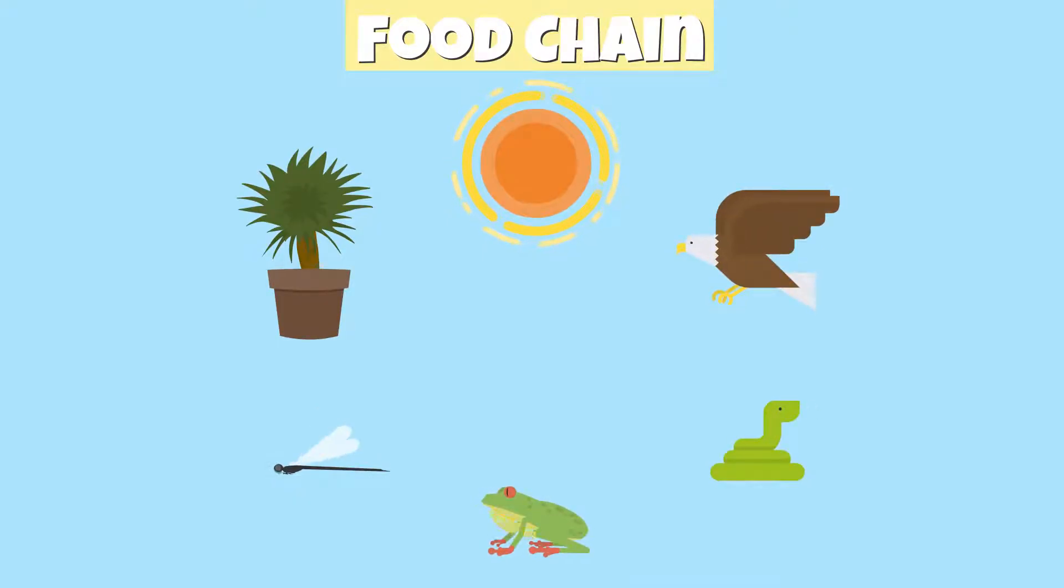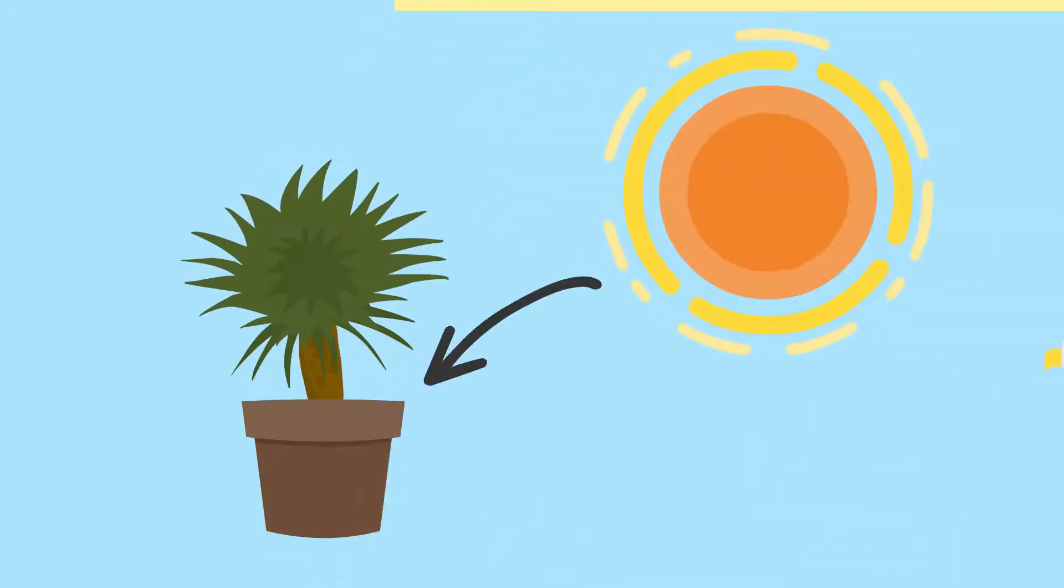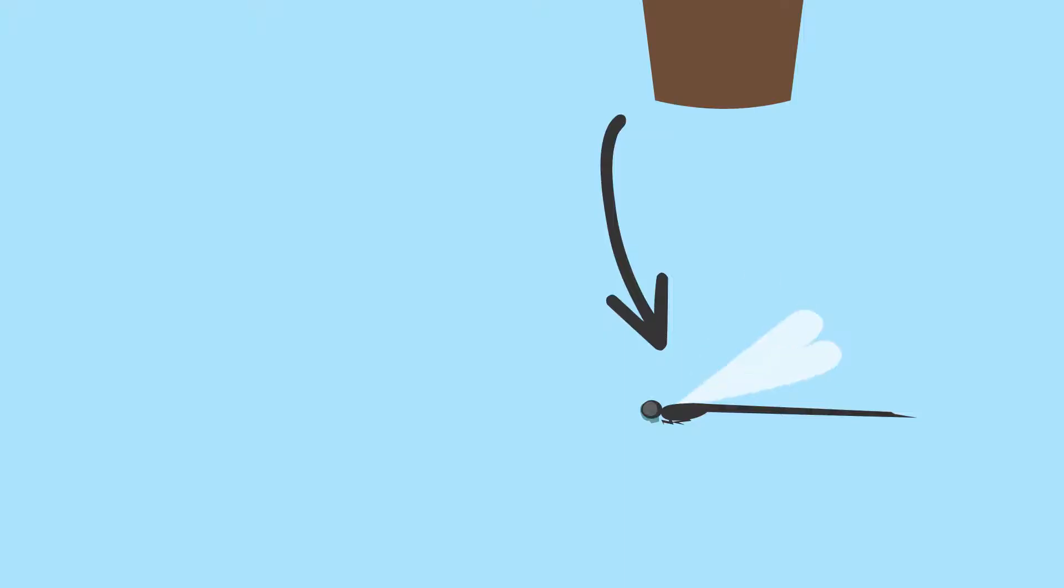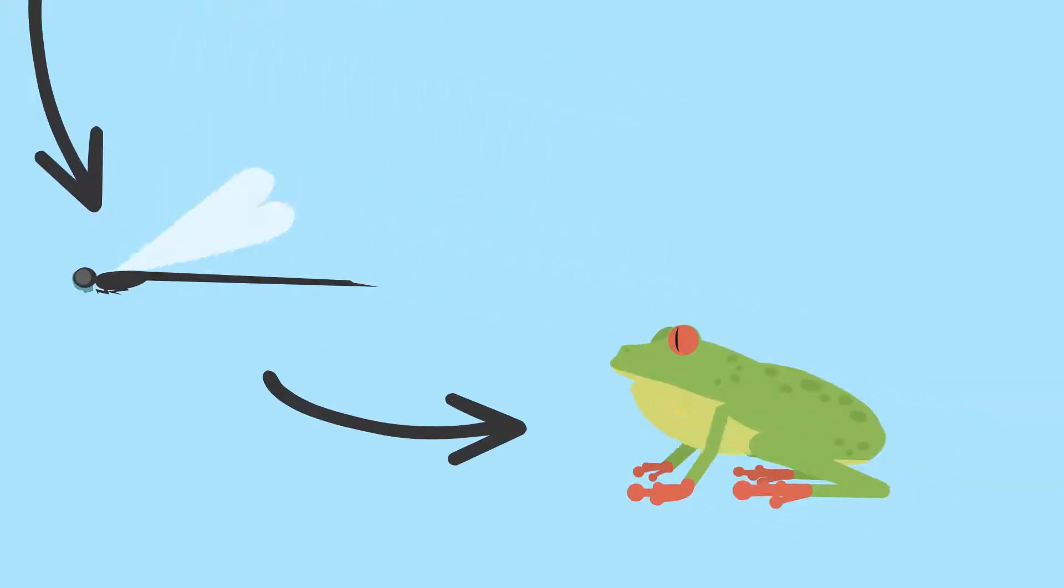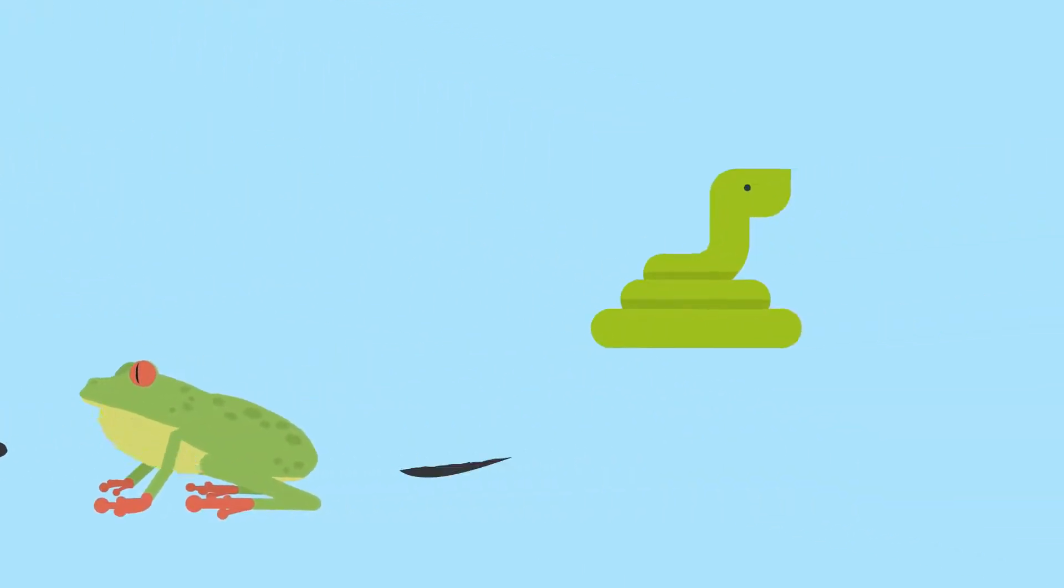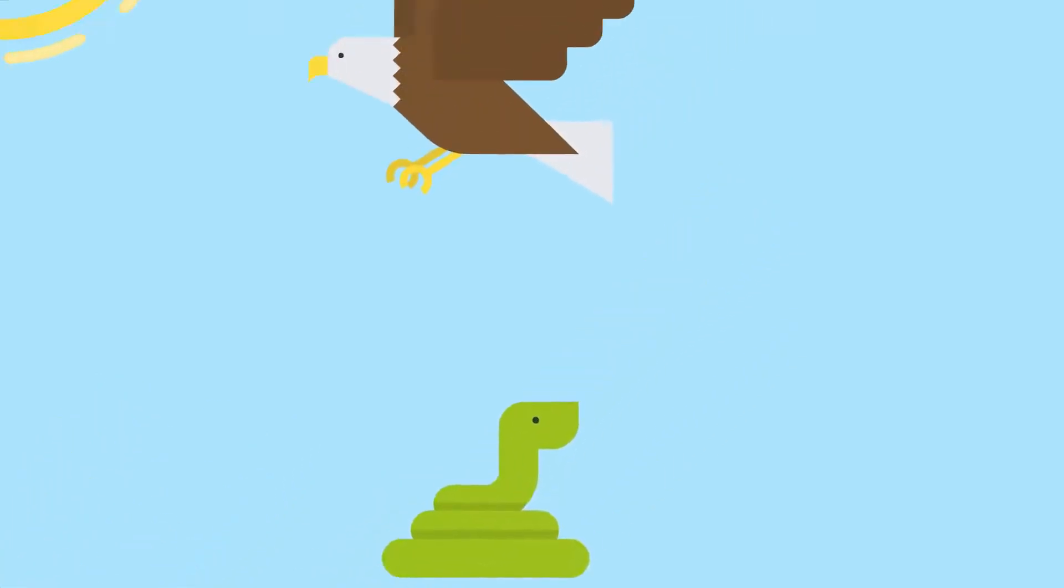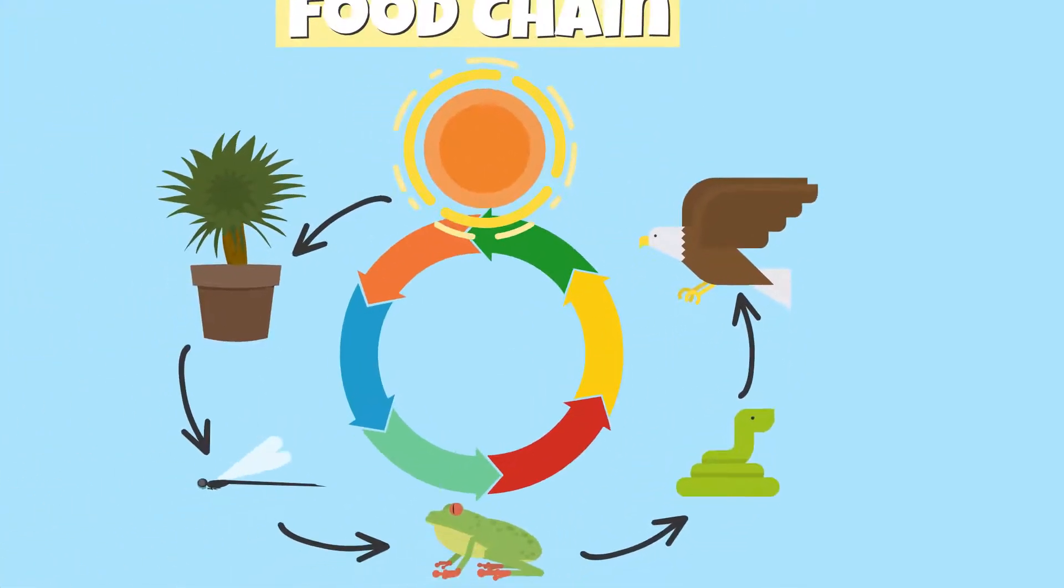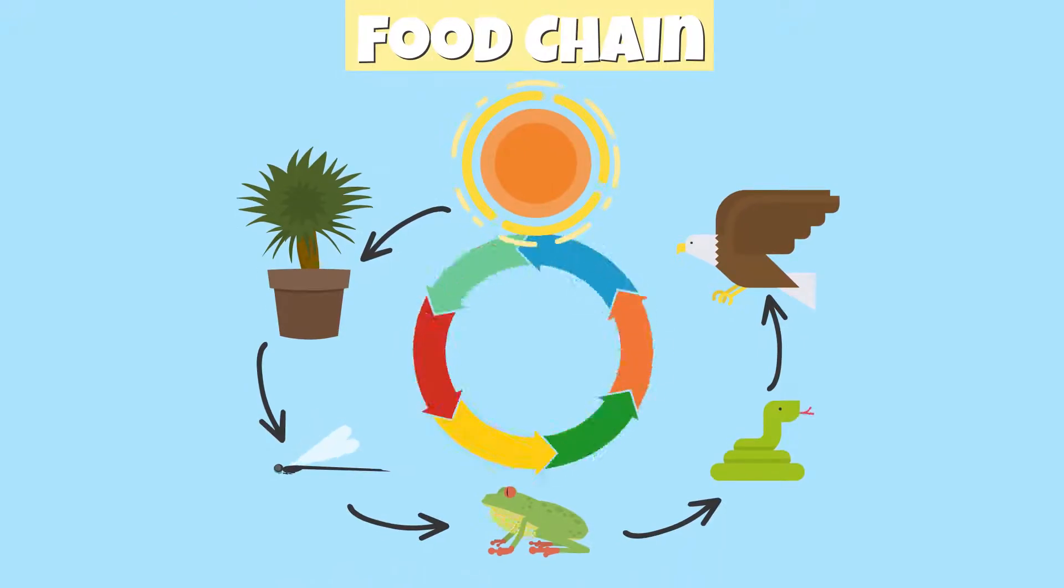A food chain can be used to show how energy flows from one organism to the other. For example, energy is transferred from the sun to a plant, from a plant to an insect, from an insect to a frog, from a frog to a snake, and from a snake to a hawk. Energy flows in the food chain as organisms eat each other as a source of food in an ecosystem.